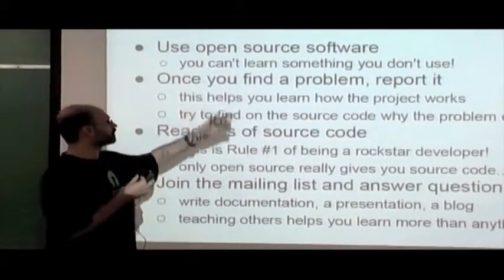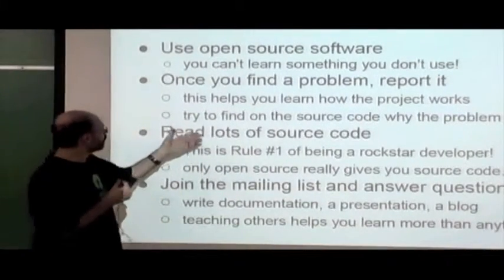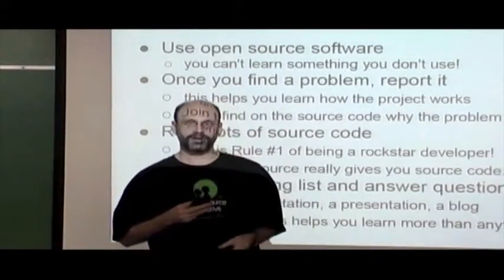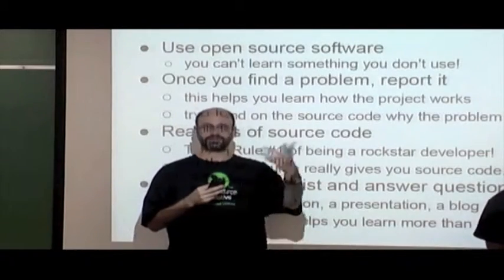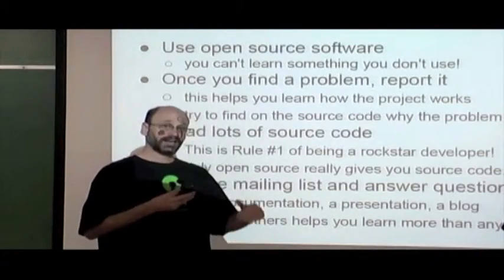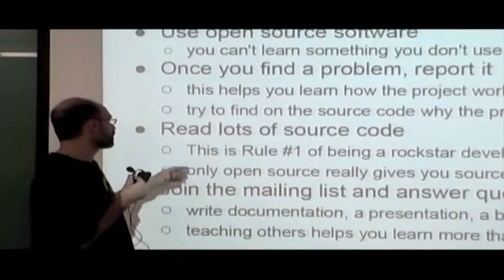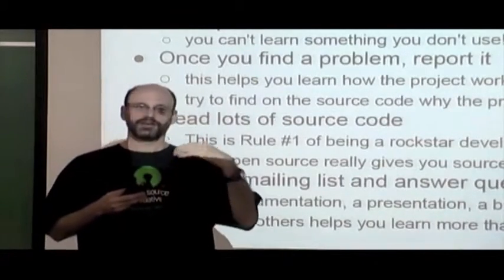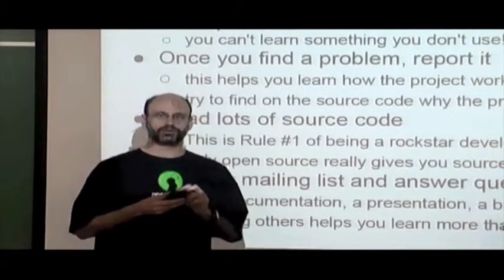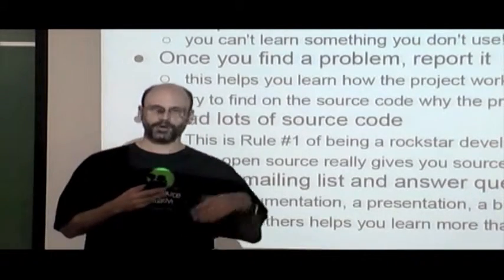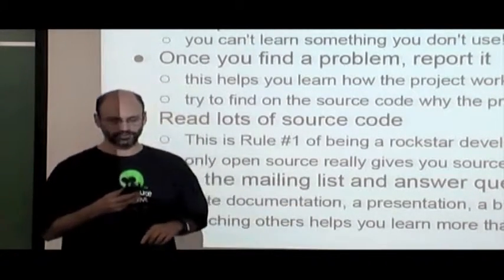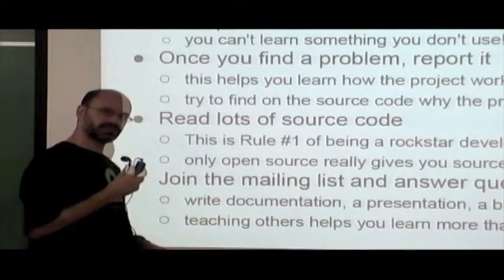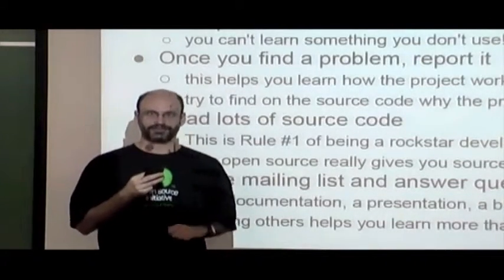Use open source software daily. Once you find a problem in the software you are using, report it immediately — this will help you learn how the project works. Look at the source code if you are a programmer and try to report not only the problem but also a possible solution. Read a lot of source code — this is rule number one of being a great developer. If you read a lot of great code, you start to learn from the experience of great programmers, and only open source gives you this possibility.